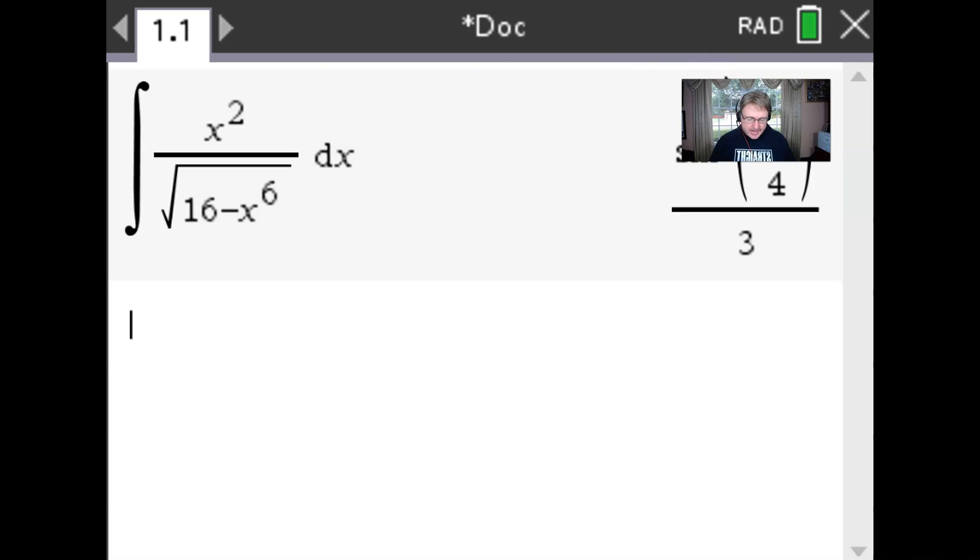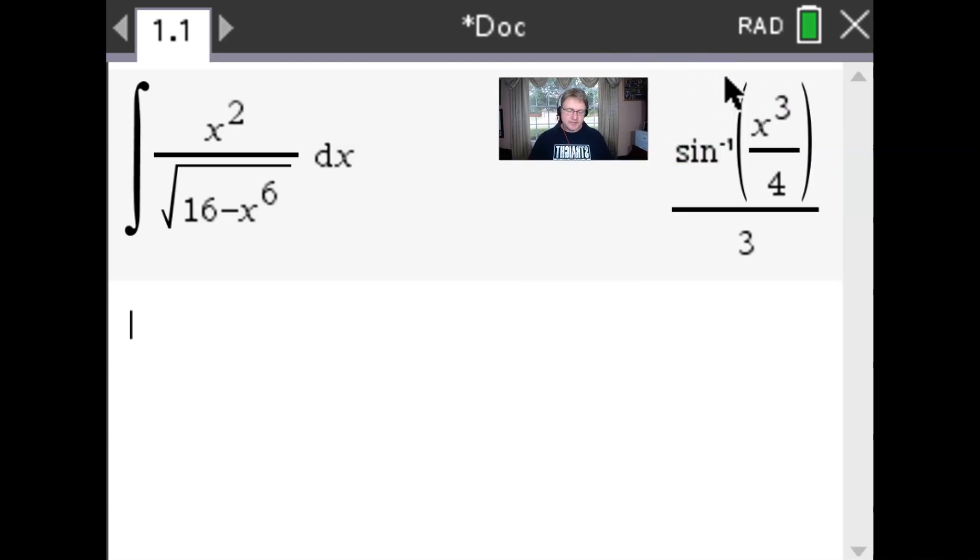Upon hitting enter, I am going to have to move my camera's window here. So we can look and we see that we have the 1 third in front. And then that arc sine written as a sine with a negative 1 superscript of x cubed over 4. And if you recall, that's exactly what we had back on our paper.